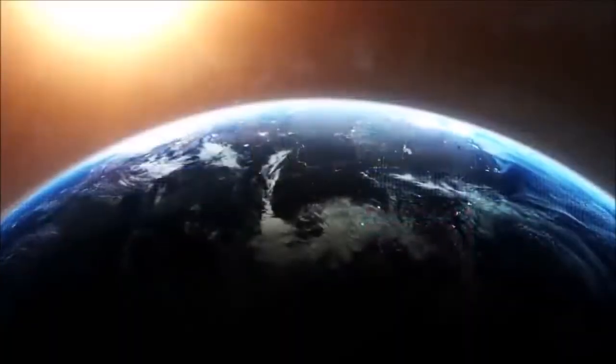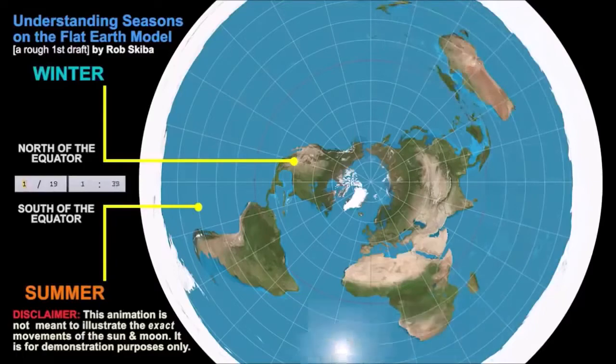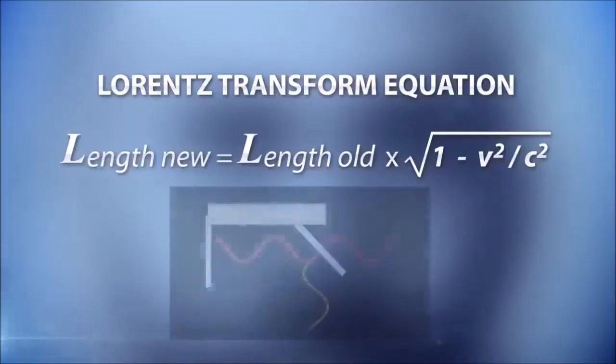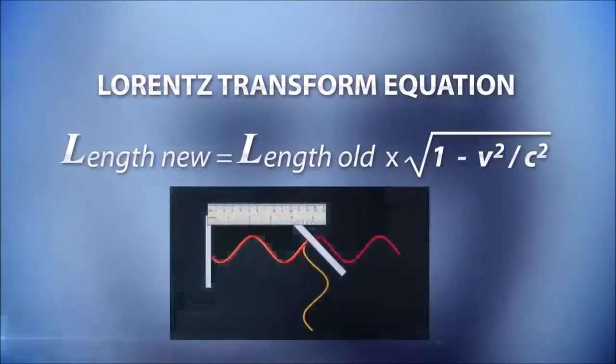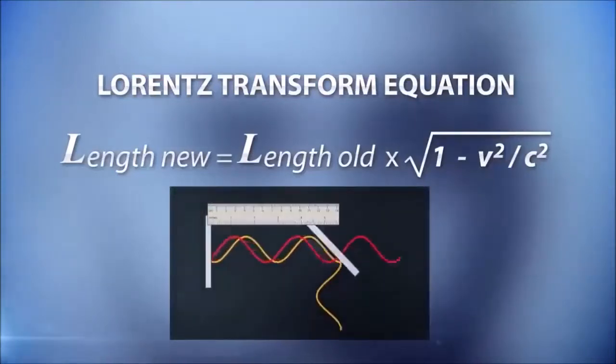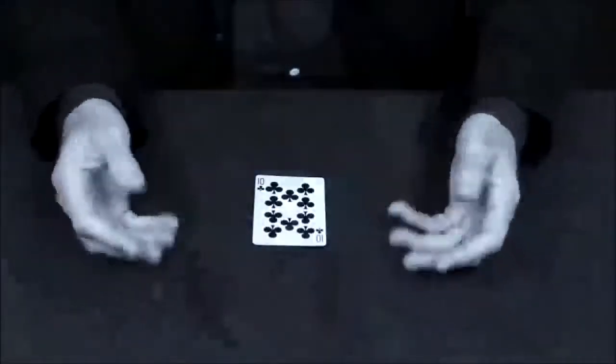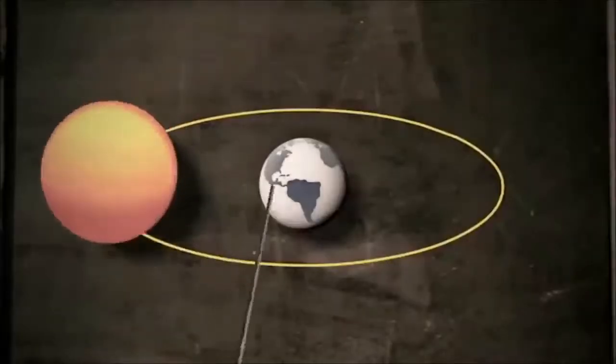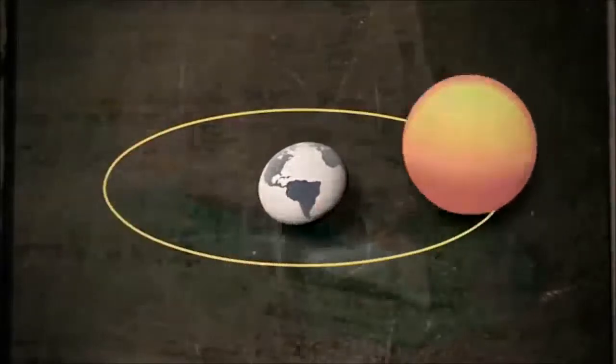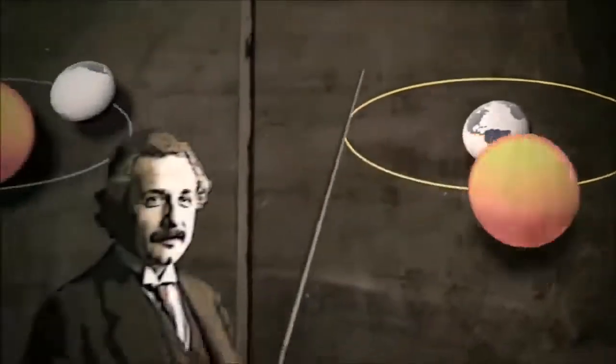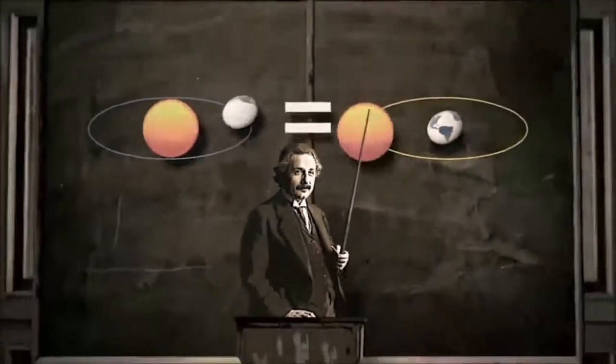In effect, any experiment that shows the earth is not moving will be mathematically transformed into a moving earth by the transform equation. The transform equation is like a magician waving his wand over the experiments so that the system one does not prefer is transformed into a system one does prefer.